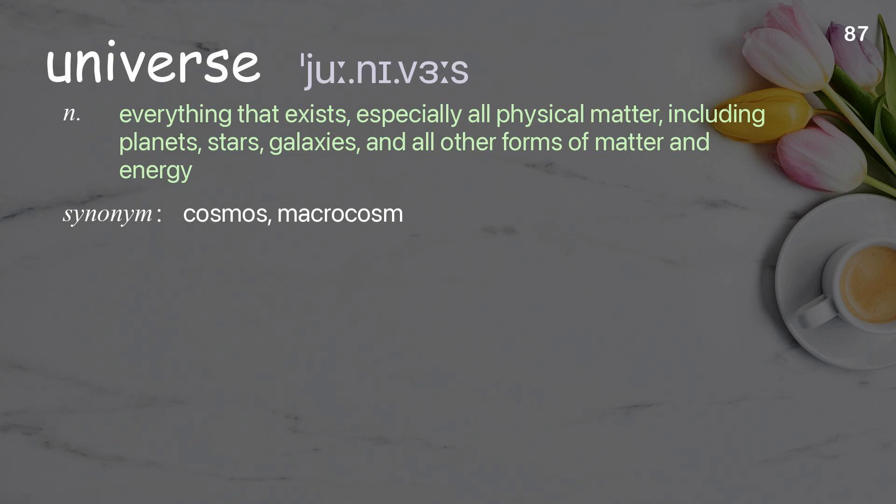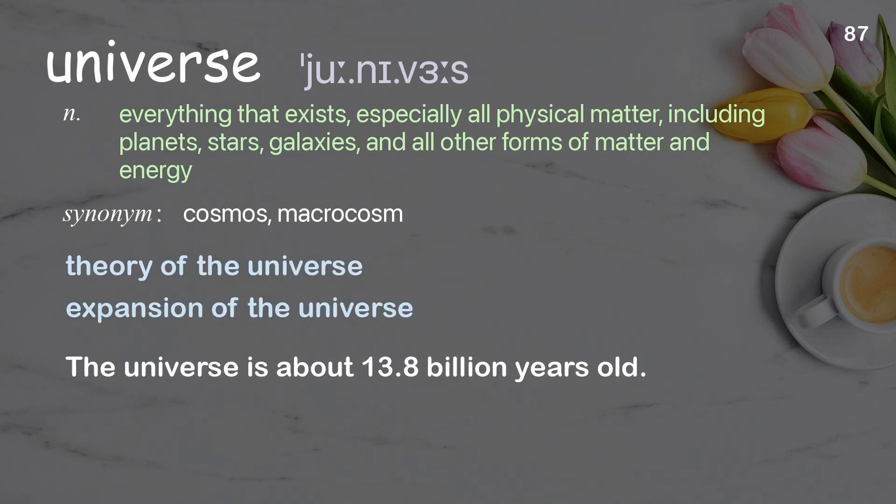Universe: Everything that exists, especially all physical matter, including planets, stars, galaxies, and all other forms of matter and energy. Examples: Theory of the universe, expansion of the universe. The universe is about 13.8 billion years old.